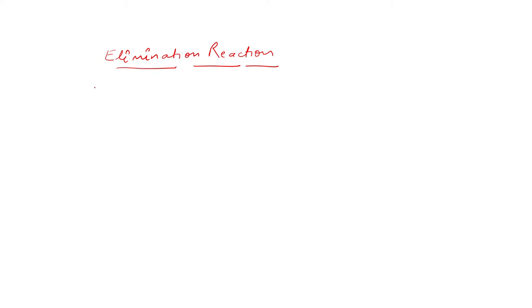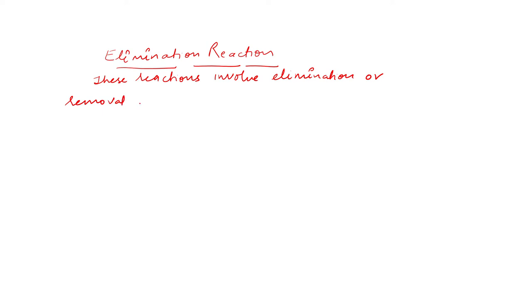Good morning class. Today we are starting with another part of organic reaction: elimination reaction. In elimination reaction, what happens is that from the same carbon or from two adjacent carbons, groups are removed, which causes a double bond or triple bond to be created between those two carbons. Such reactions are called elimination reactions. This is the opposite of addition reaction — in addition, double bond becomes single bond; here, single bond becomes double bond. These reactions involve elimination or removal of groups.